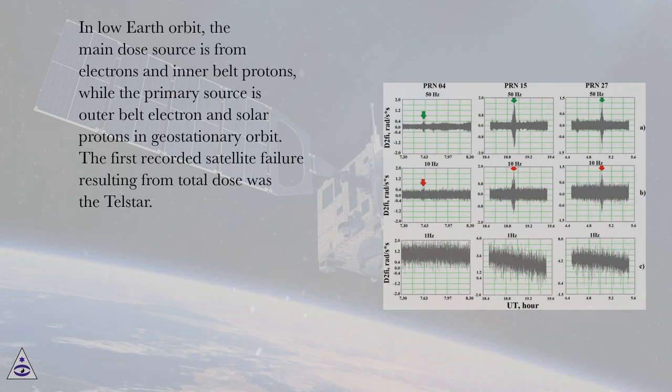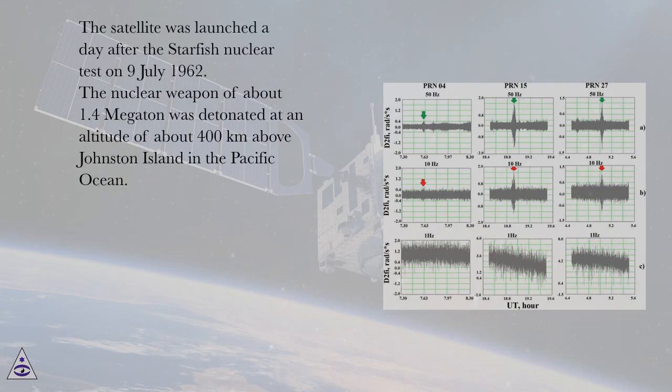The first recorded satellite failure resulting from total dose was the Telstar. The satellite was launched a day after the Starfish nuclear test on July 9, 1962. The nuclear weapon of about 1.4 megatons was detonated at an altitude of about 400 kilometers above Johnston Island in the Pacific Ocean.